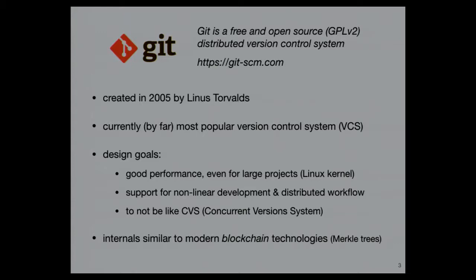GitHub also has an issue tracker, code review, wikis, websites — a whole bunch of things. Underneath GitHub there's Git, the version control system that Linus Torvalds created — the same guy behind the Linux kernel. It's certainly the most popular version control system today. Internally it works a little bit like blockchains before blockchain was cool — all the hashing and that stuff going on is pretty much also what's going on in the blockchain.